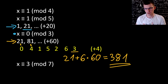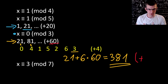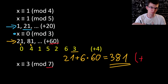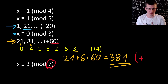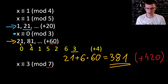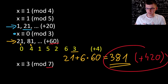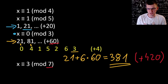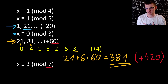And if you want to find all the solutions, the new LCM is LCM of 60 and 7. 60 represented the LCM of moduli so far; then we also need to consider 7. They are co-prime, so 60 times 7 is 420. Remember, if they are not co-prime, it's not simply a product. So the next solution is 381 plus 420, which is 801, and so on.